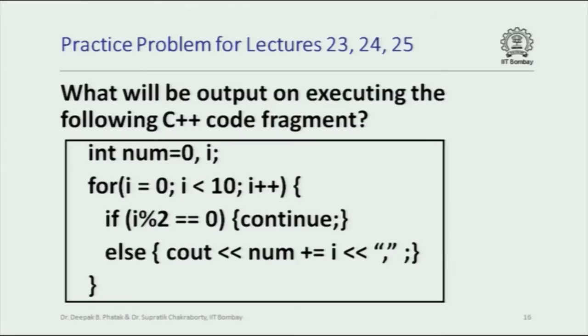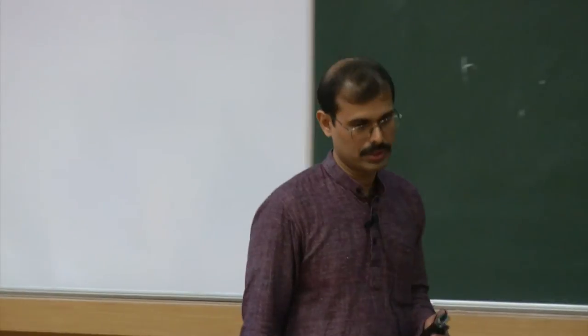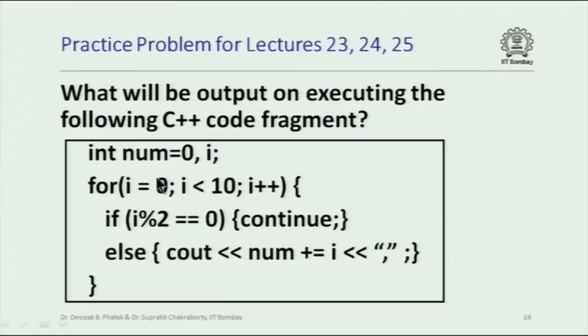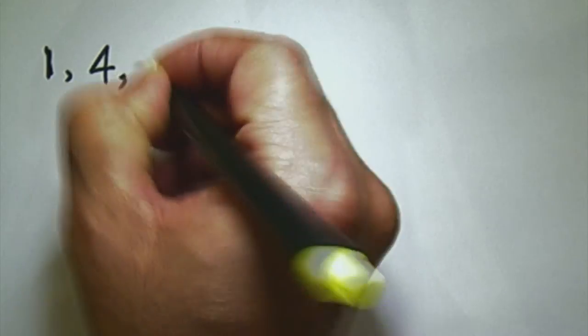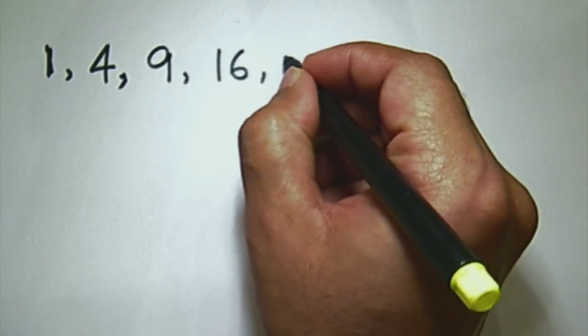The next question is a code fragment and you are required to figure out what will be output. It is very important to be able to mentally execute small pieces of code and understand what they do for given input values. There are two integer variables num and i; num is initialized to 0, i is not initialized. Then there is a simple for loop. If the remainder on division by 2 equals 0, there is a continue statement. Otherwise something is printed out. Any disagreements? 1, 4, 9, 16, 25 ...